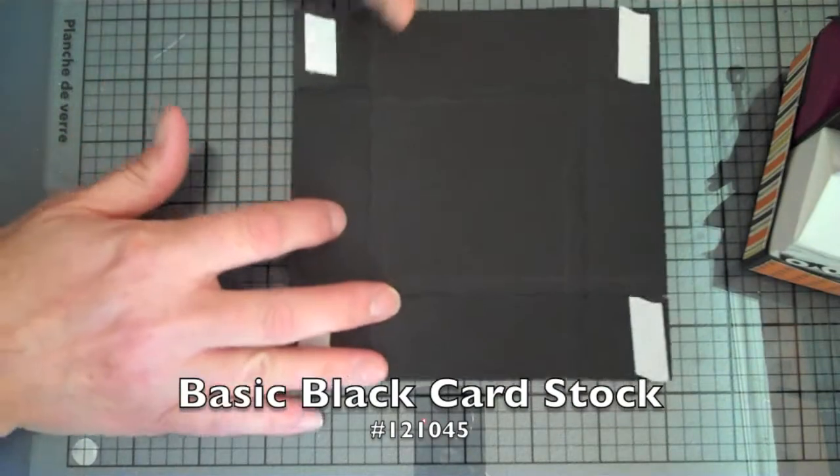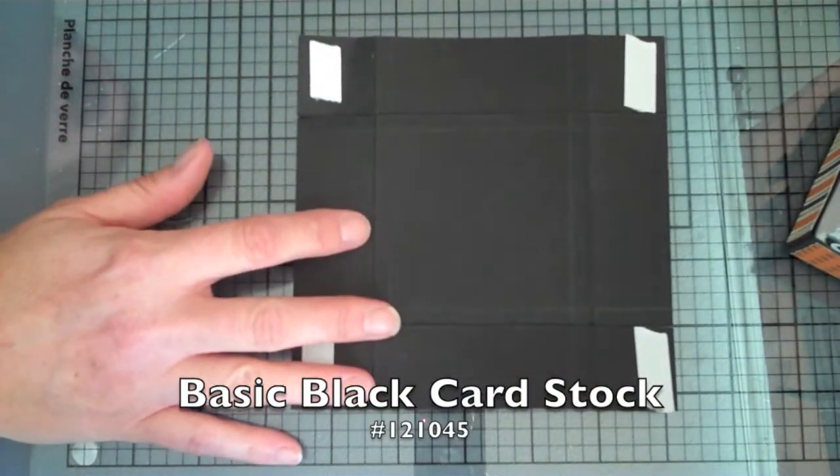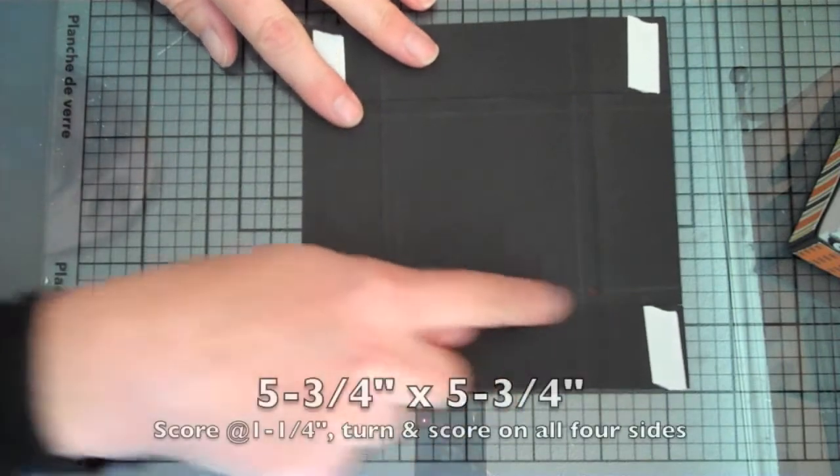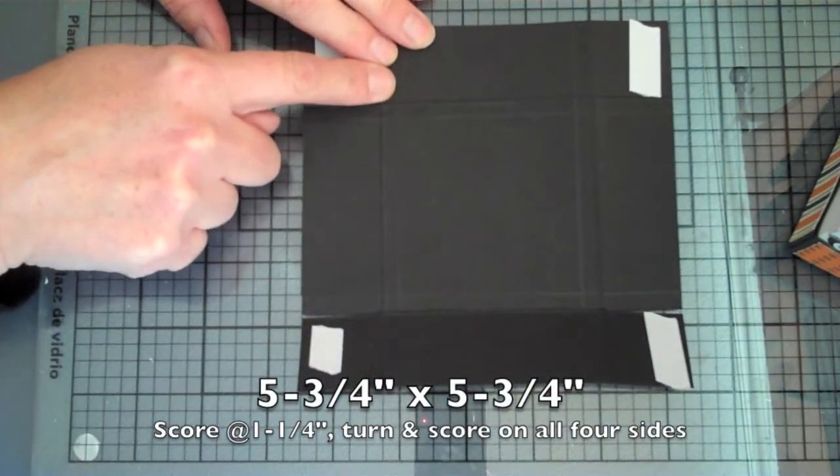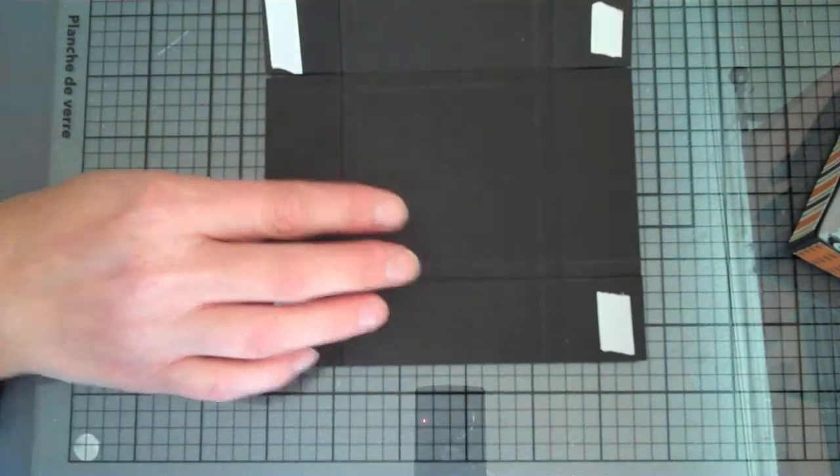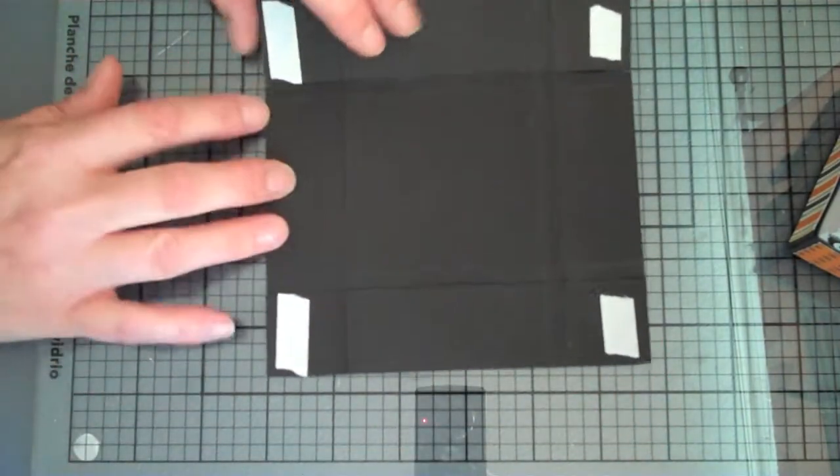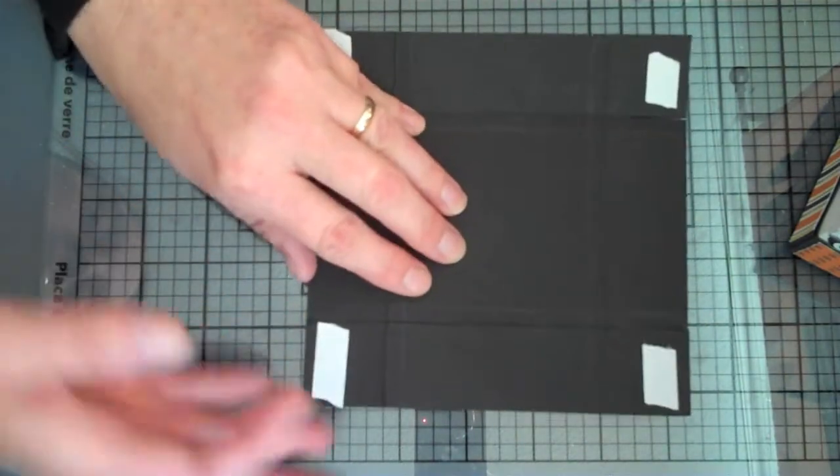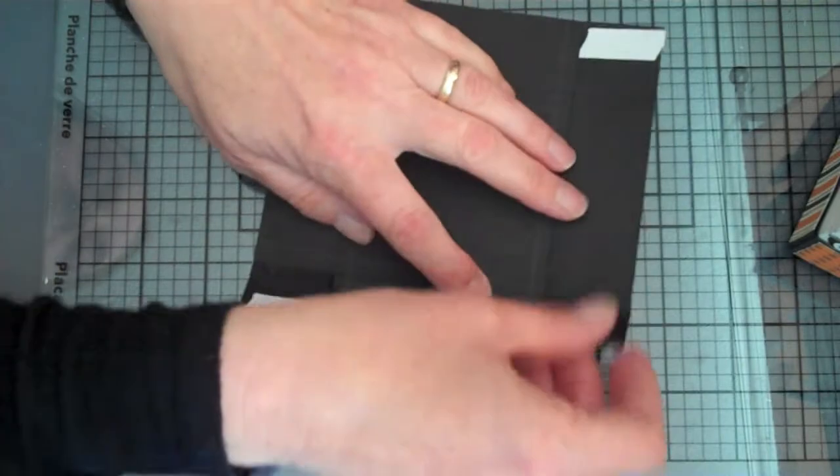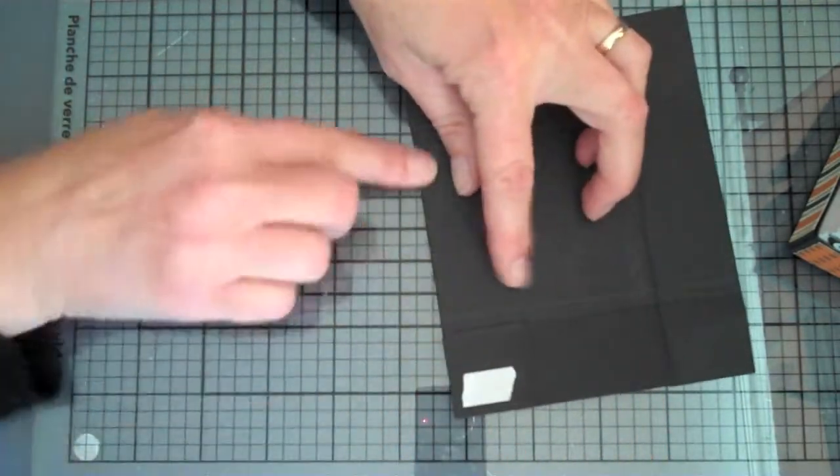This is a piece of basic black cardstock and this one measures five and three quarters by five and three quarters and I scored it at one and a quarter all the way around. I took my paper snip scissors and I cut up to each of the score lines on the four sides and then folded on those score lines.